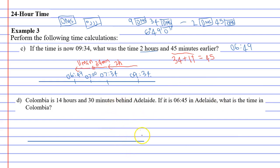So Columbia is behind Adelaide. So we're going to put our 6.45 over here on the right, and we've got to take off 14 hours and 30 minutes. So what we've got to do is we've got to look at where 12 o'clock is. So let's put it here, it's actually 12 midnight, so let's write 12 midnight, which in 24-hour time is 0.00 hours.